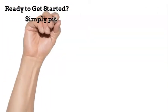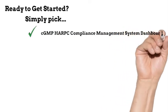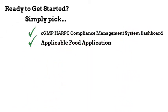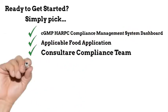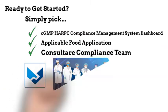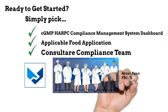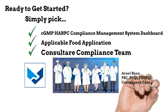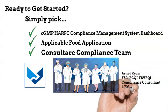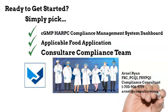Ready to get started? Simply pick your CGMP-HARPC Compliance Management System dashboard and your applicable food application, and the rest is handled by your Consulterre compliance team. For a free consultation, contact Arnell Ryan at 1-703-906-9719 or via email at arnell@consulterreinc.com.